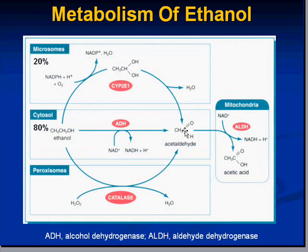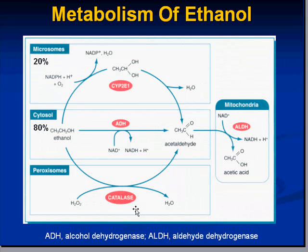The same conversion occurs at the cytosol level for about 80 percent of alcohol metabolism: ethanol is converted into acetaldehyde, and in this oxidation process NAD+ picks up a hydrogen ion to become NADH. The acetaldehyde can be further oxidized in the mitochondria into acetic acid, also splitting off NAD into NADH plus a proton. At the peroxisome level, catalase converts hydrogen peroxide into water.